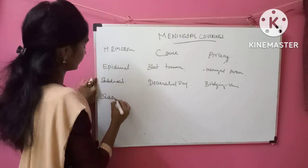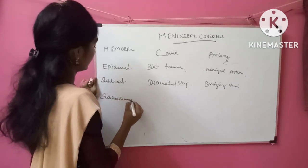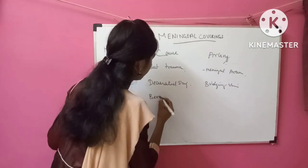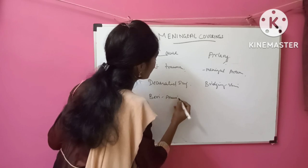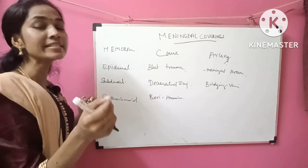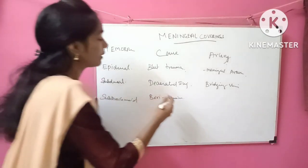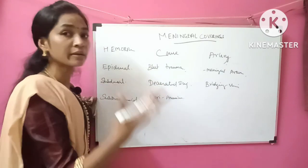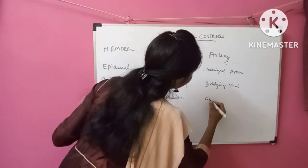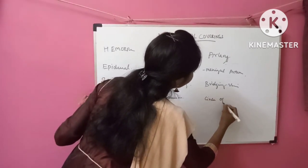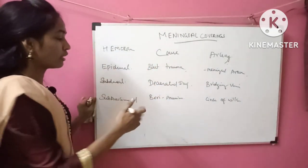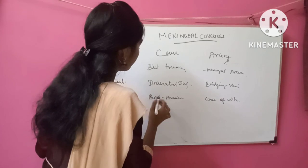Thirdly, subarachnoid hemorrhage — it is caused by a berry aneurysm. Berry aneurysm is usually found in babies. An aneurysm means abnormal bulging of an artery; due to the bulging, the artery ruptures. It is usually in the circle of Willis. The aneurysm present in the circle of Willis is called a berry aneurysm.